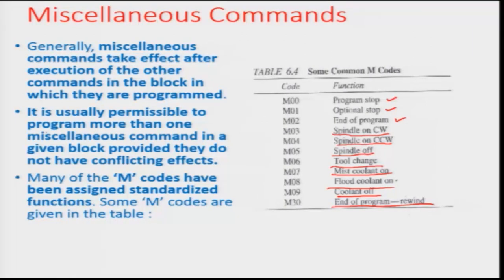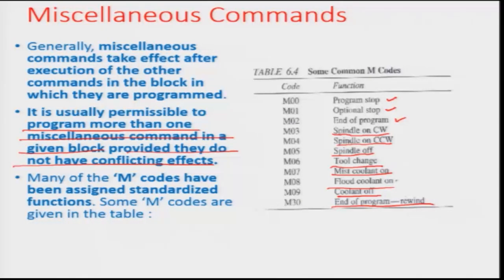It is usually permissible to program more than one miscellaneous command in a given block, provided that there are no conflicting effects. For example, in a certain block you can specify mist coolant on, but it is not a good idea to also specify flood coolant on, as they have conflicting interests and may cause an error in reading. Unless such conflicting factors arise, you can have more than one miscellaneous command in a single block.